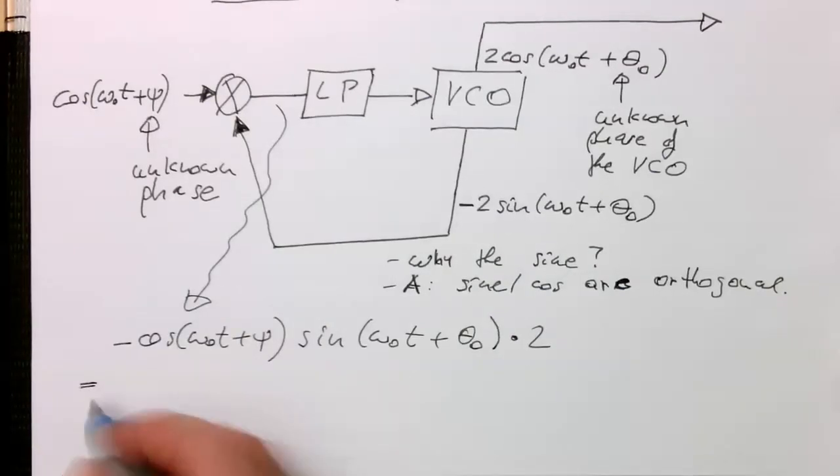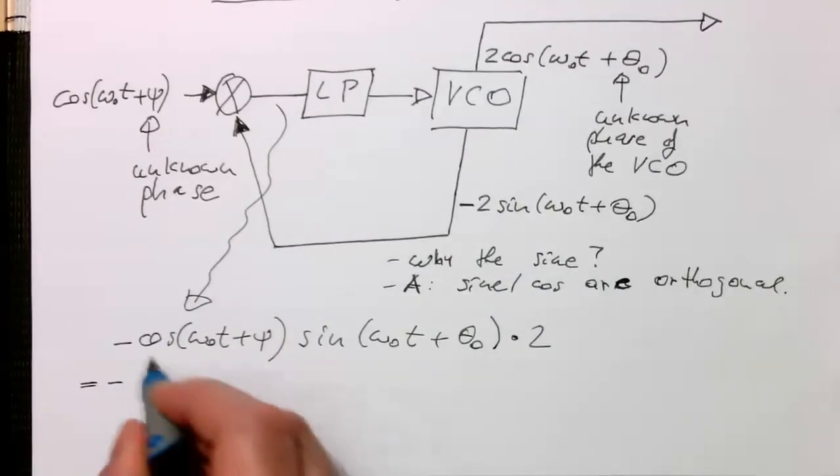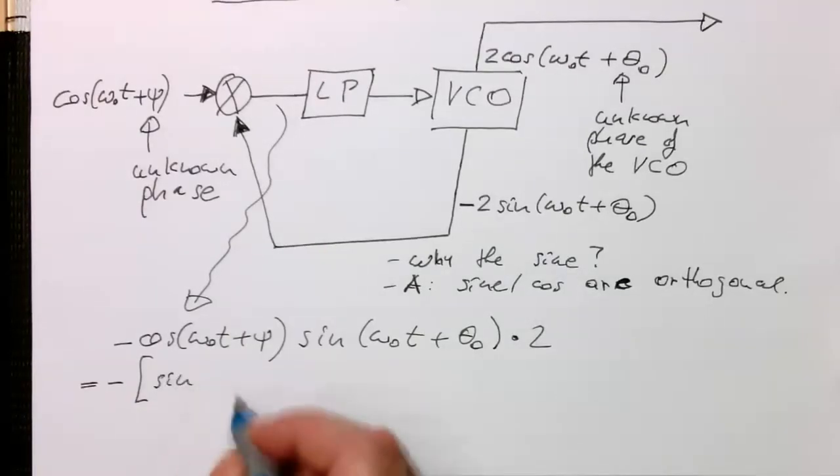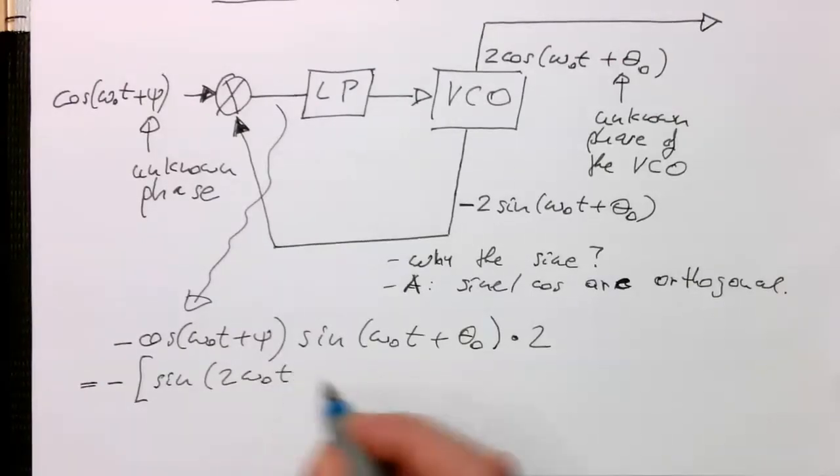So therefore this then turns into minus square brackets minus sine of two omega zero t plus psi plus theta zero.